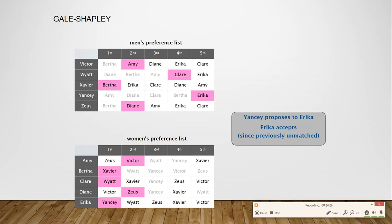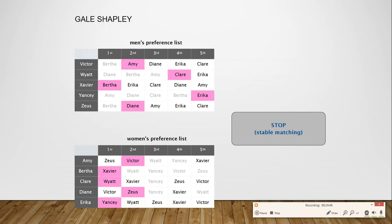Now each man and woman is paired up and no one is paired with more than one person of the opposite gender. Victor is paired with Amy, Watt with Claire, Xavier with Bertha, Yancy with Erika, and Zeus with Diana. The stable matching algorithm stops here.